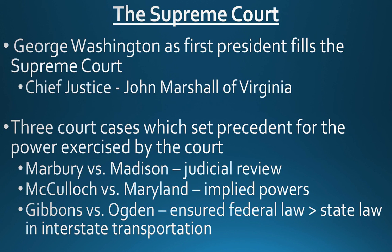When George Washington was chosen as the first President, one of his obligations was to fill the Supreme Court — the top of the judicial branch. One member would become the Chief Justice, or head of the Supreme Court, and this was John Marshall, also from Virginia. Under the Marshall Court, a number of cases helped set precedent for the power ultimately exercised by the Supreme Court. The first major one is Marbury v. Madison, which established the idea of judicial review — the court's ability to rule laws unconstitutional, effectively making an unconstitutional law disappear as if it never happened.